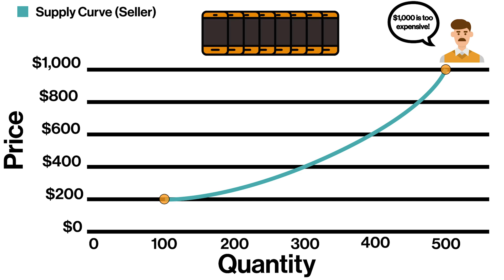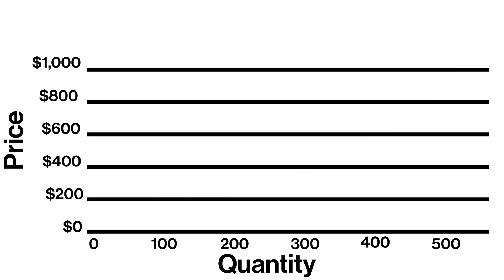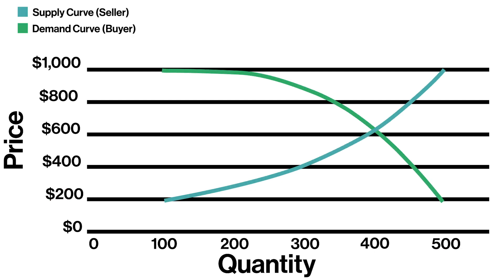Because maybe customers won't want to pay that much, which would leave Mango Phones with a large amount of unsold phones. Now let's look at this from the perspective of the customer, the buyer. At a price of $1,000 per phone, customers want to buy 100 phones. What is the ideal point at which all the phones produced by Mango Phones will be purchased by customers? Right here at $600 a phone and a quantity of 400 phones — this point is known as the equilibrium price.